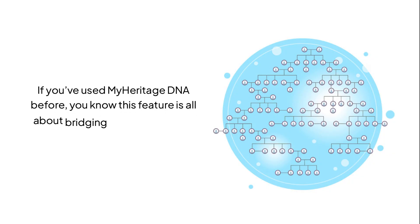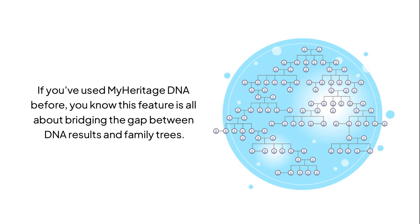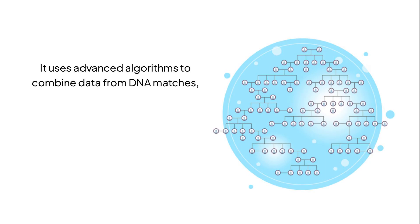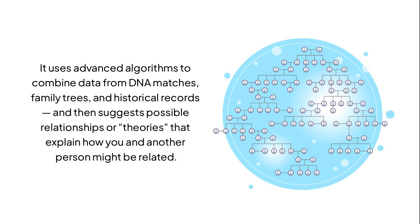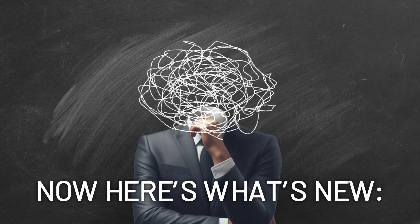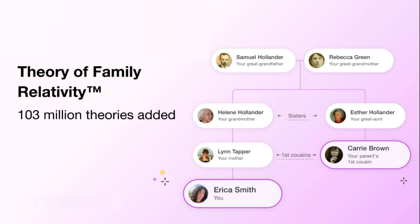If you've used MyHeritage DNA before, you know this feature is all about bridging the gap between DNA results and family trees. It uses advanced algorithms to combine data from DNA matches, family trees, and historical records, and then suggests possible relationships or theories that explain how you and another person might be related. MyHeritage has just added 103 million new theories — that's a 44% increase in total relationship paths since their last major update. That means millions of new connections that didn't exist before are now discoverable.